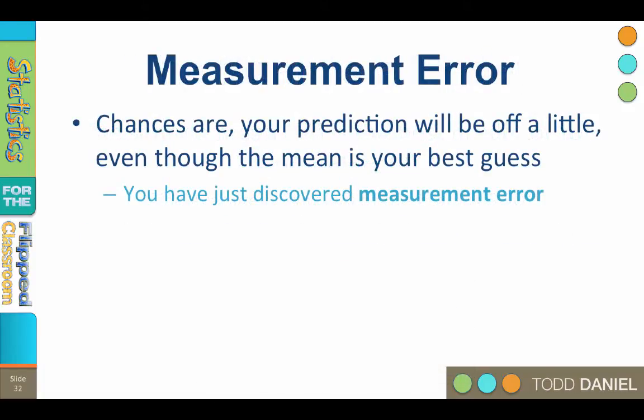When you use a mean to predict or estimate, your prediction or estimate is likely to be off a little. This is because each measurement of the subjects, X, in the sample varies from the mean, M. This is what is meant by the scores have variability.